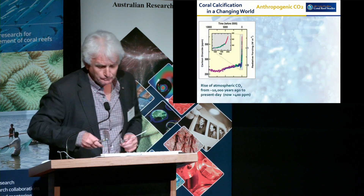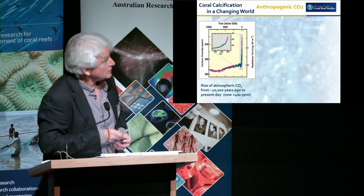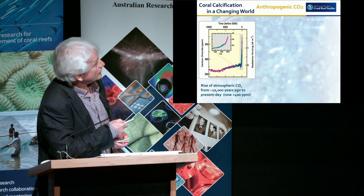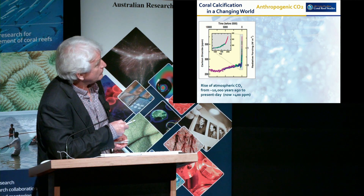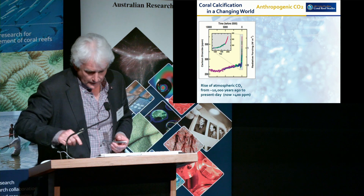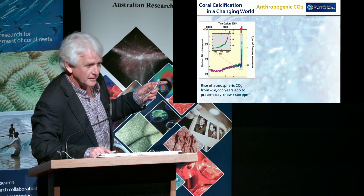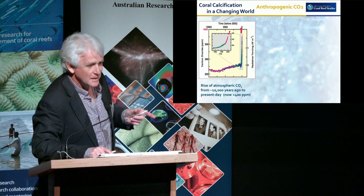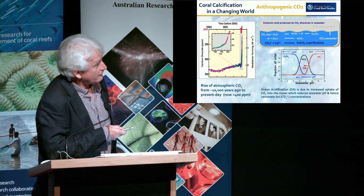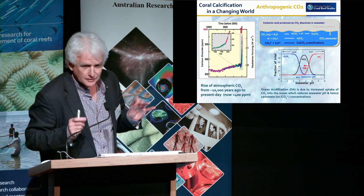Ocean acidification is a very simple process — it's the uptake of CO2 into seawater. This shows what we're doing over long timescales, going back 10,000 years. Most of the recent history of reefs have experienced CO2 levels through 330 ppm, and now we're shooting it essentially off scale. This graph was made in 2005, and since that period we've moved above 400 ppm. In thinking about the simple effect of dissolving CO2 into seawater, it's a very simple chemical reaction that's well known.